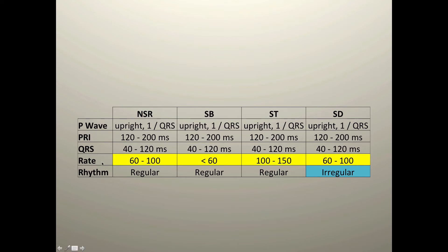The changes between sinus rhythm, sinus bradycardia, sinus tachycardia, and sinus dysrhythmia — the only difference between these four rhythms essentially lies within the rate. In the case of sinus dysrhythmia, it's the regularity of the rhythm that differentiates it from normal sinus rhythm or one of the other sinus rhythms.